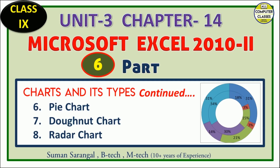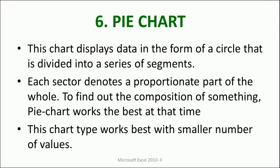Let's begin with the pie chart. This chart displays data in the form of a circle. When you draw a circle, it is divided into a series of segments, and each segment represents something. Each sector denotes a proportionate part of the whole. To find out the composition of something, pie charts work the best.